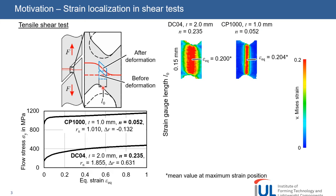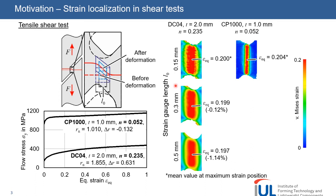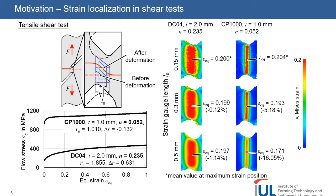Depending on the strain gauge length L0, which is the size of these elements, the discrete approximation is more or less accurate. To show the influence, we increased the gauge length from initially 0.15 mm to values up to 0.5 mm. For the weakly localizing DC04, only small deviations of the measured strains can be seen. But for the strongly localizing CP1000, the measured strain is up to 16% smaller for the larger gauge length.